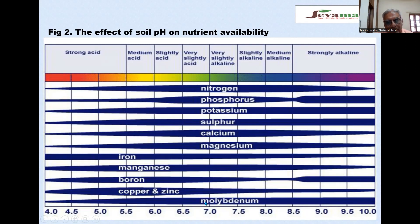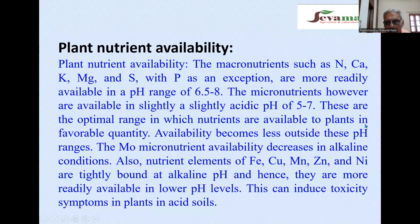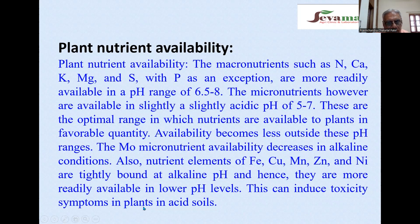Molybdenum is an exception among micronutrients — it is more available in the alkaline range. Macronutrients such as nitrogen, phosphorus, potassium, magnesium, and sulfur are more readily available at a pH of 6.5 to 8, with phosphorus as an exception. Micronutrients are available at a slightly acidic pH of 5 to 7. Nutrients such as iron, copper, manganese, zinc, and nickel are tightly bound at alkaline pH and more readily available at lower pH levels, which can induce toxicity symptoms in plants in acid soil.